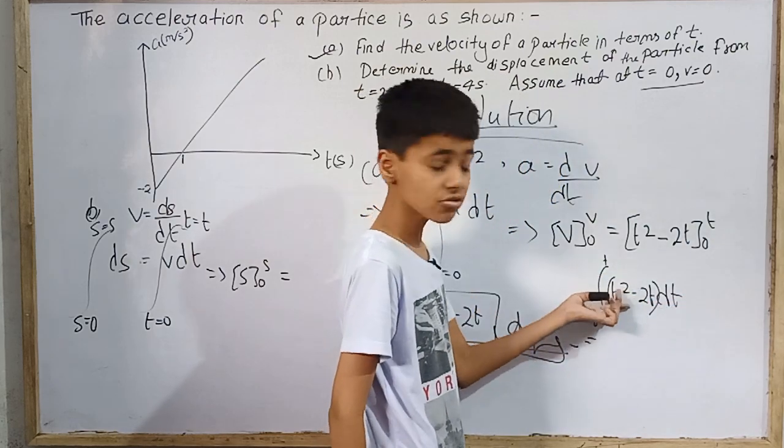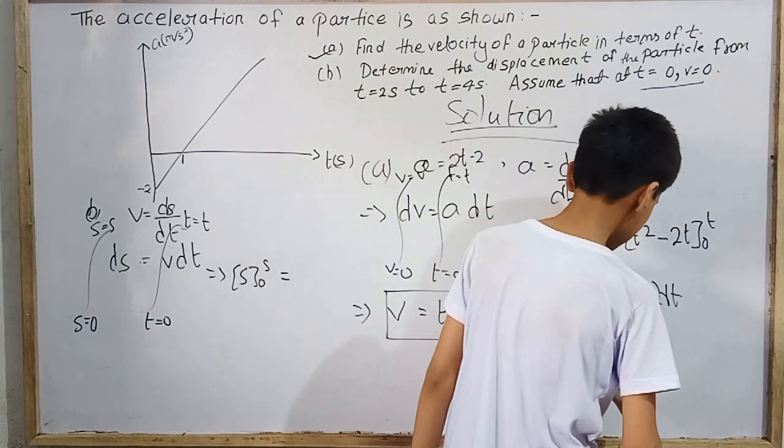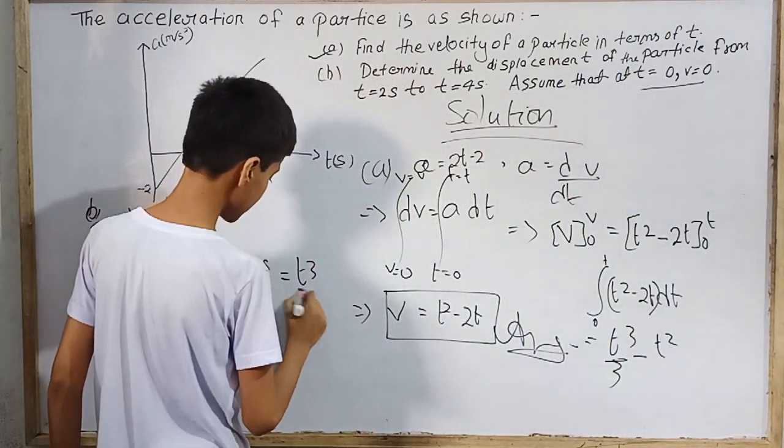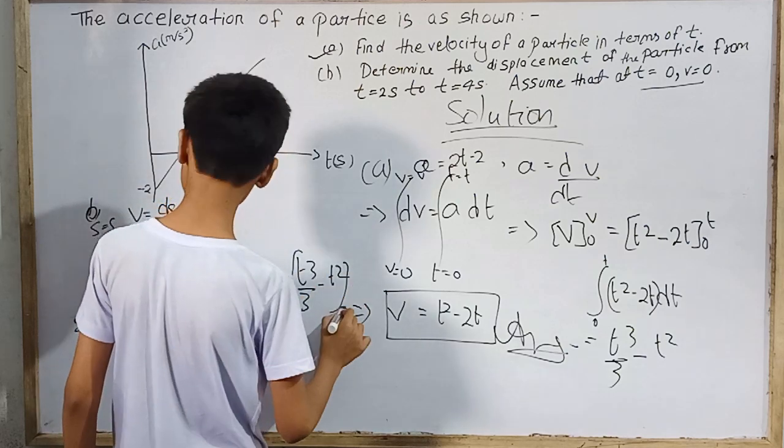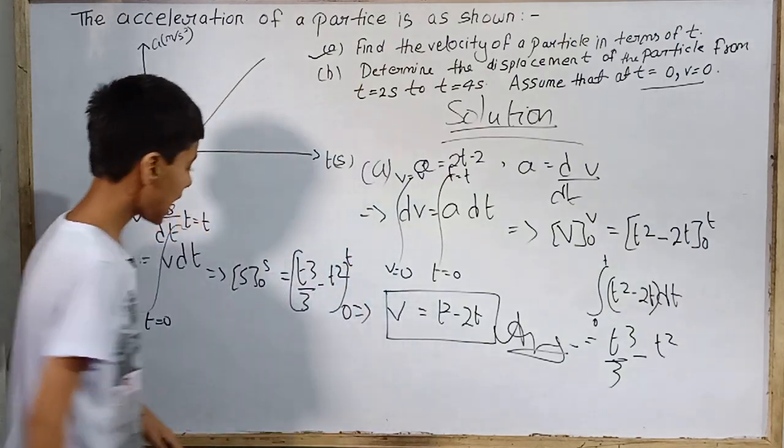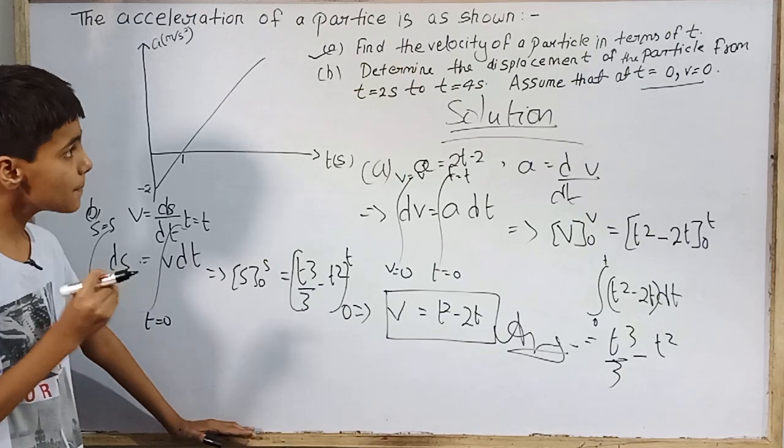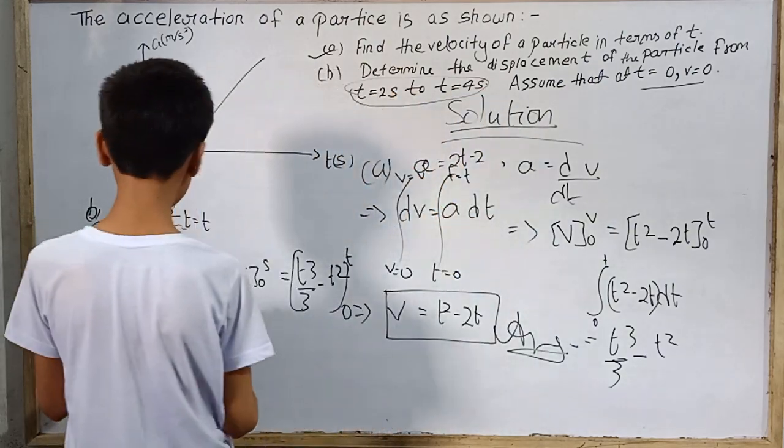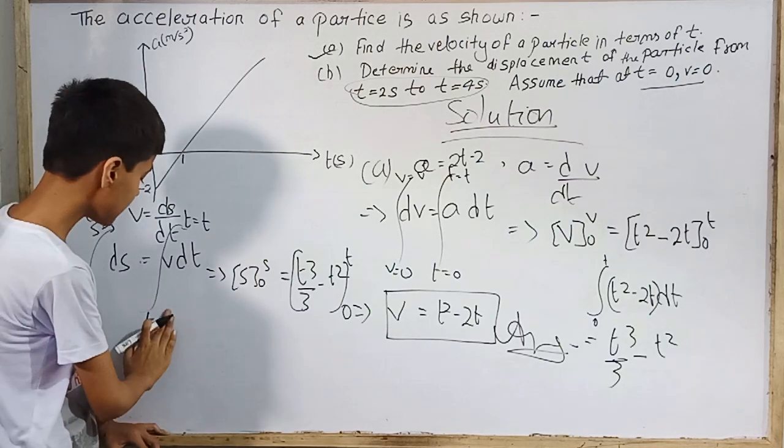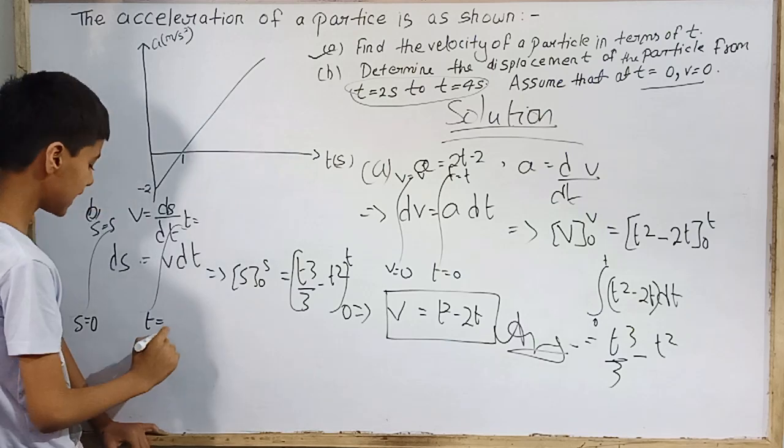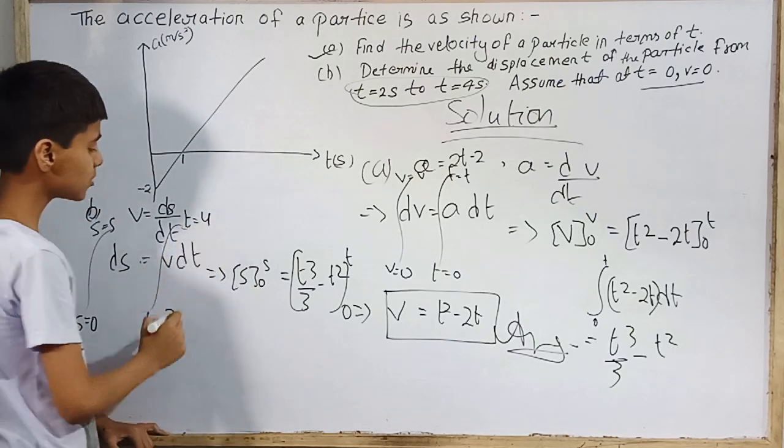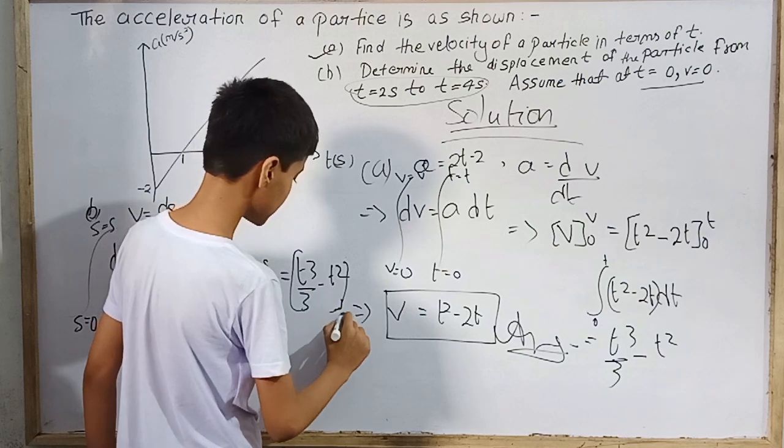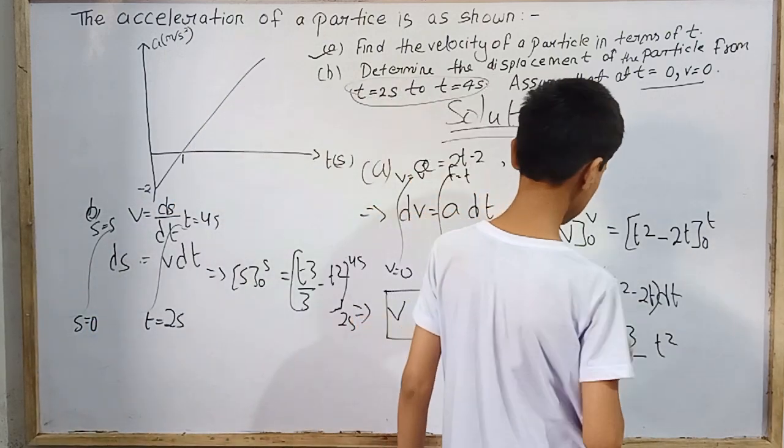t square integration will be t cube by 3. Minus t square. So this equals t cube by 3 minus t square from 0 to t. But here is given t equals 2 seconds to 4 seconds. If we need the expression, that would be good, but we have to do the actual calculation from 2 seconds to 4 seconds. So here it's 2 to 4 instead of 0 to t. This is 2 seconds to 4 seconds.